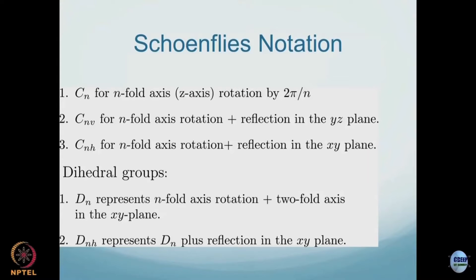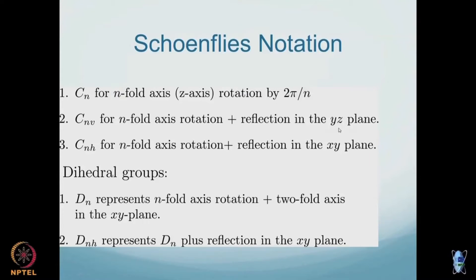Cn is for an n-fold z-axis rotation by 2π/n. Cnv — for example C2v — is an n-fold rotation plus reflection in the yz-plane. Cnh is an n-fold axis rotation plus reflection in the xy-plane. I am going to take the axis to be along the z-axis.